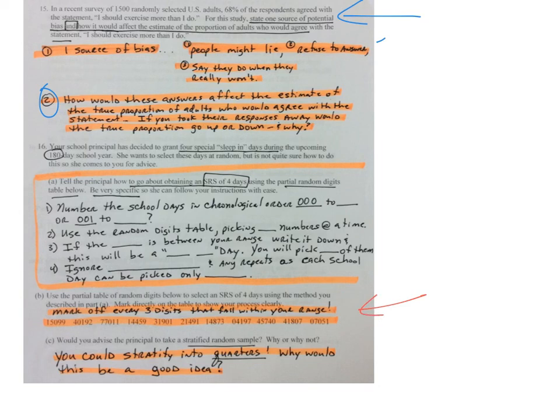So I want you to show me that you can do this. You're going to have to write down the numbers. And then finally, you advise the principal to take a stratified sample. You could stratify into quarters. Now I want to know why would stratifying into quarters be a good idea?